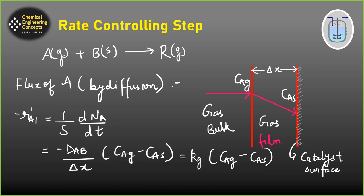Now, if both reaction and mass transfer diffusion are happening, how do we find out which one is the rate-controlling step? Let's look at this mechanism. We have gaseous reactant A reacting to give product R in gaseous form, with B as a solid catalyst. First, component A travels from the gas bulk onto the film outside the catalyst surface.